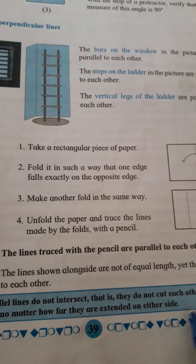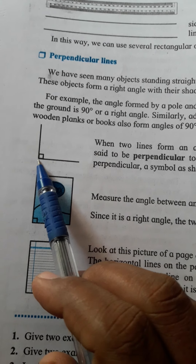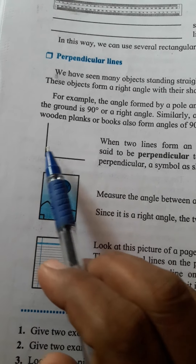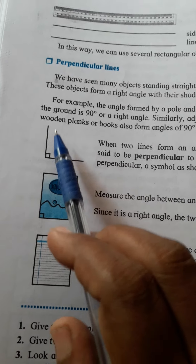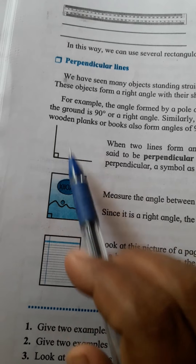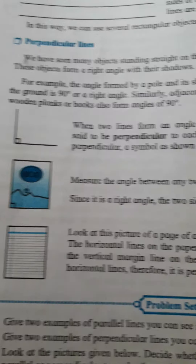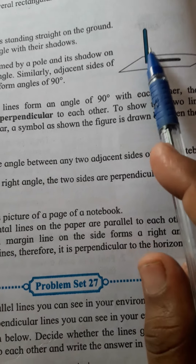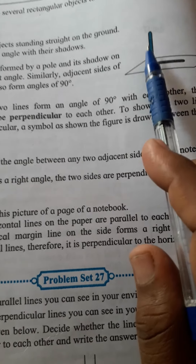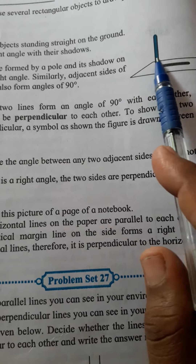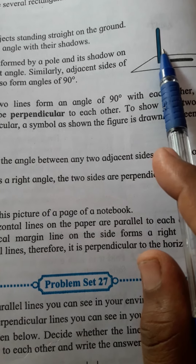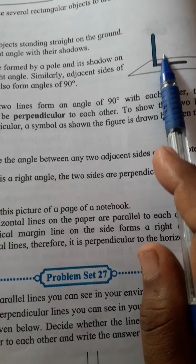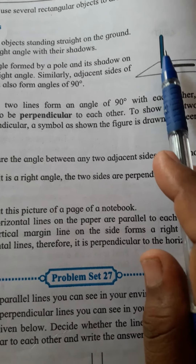Second: acute angle. An angle which measures less than a right angle — means less than 90 degrees — is called an acute angle. For example, angle RST or angle TSR, which is less than 90 degrees. That type of angle we call an acute angle.